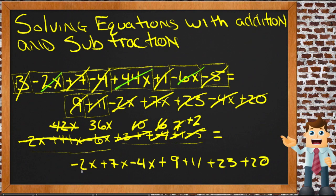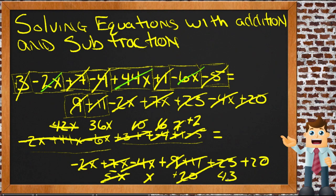On the right-hand side, we have negative 2x plus 7, that's 5x. 5x minus 4x is 1x. And that's it for x's. 9 plus 11 is 20. Positive 20. 20 plus 23 is 43. 20 plus 23 is 43. And 43 plus 20 is 63. Positive 63.